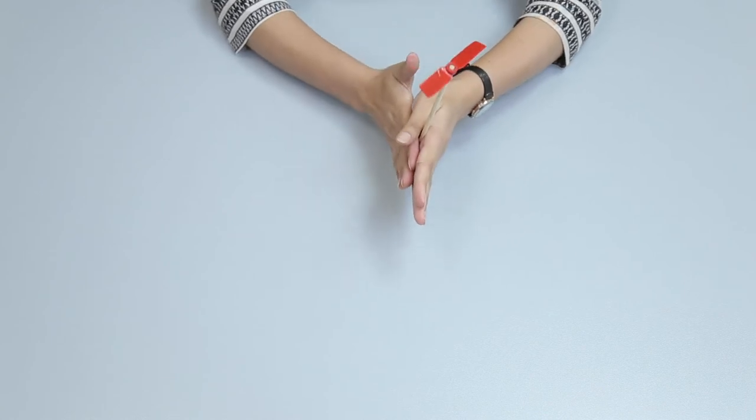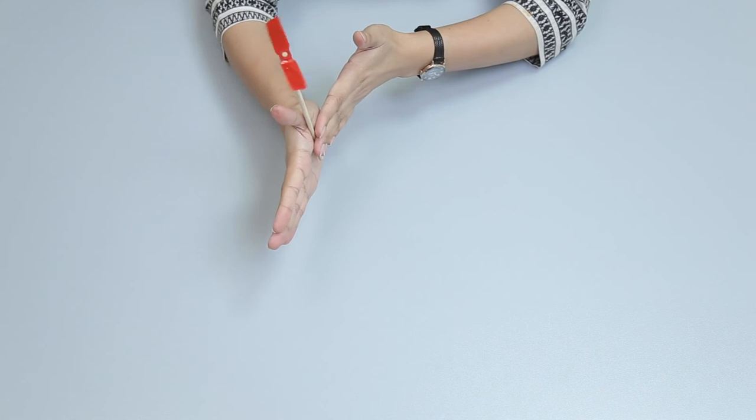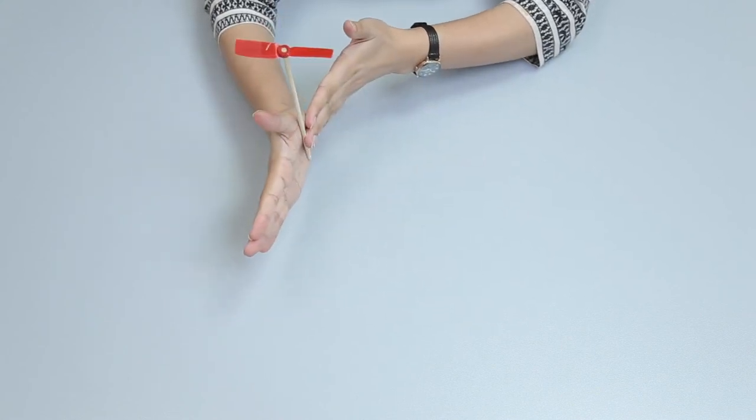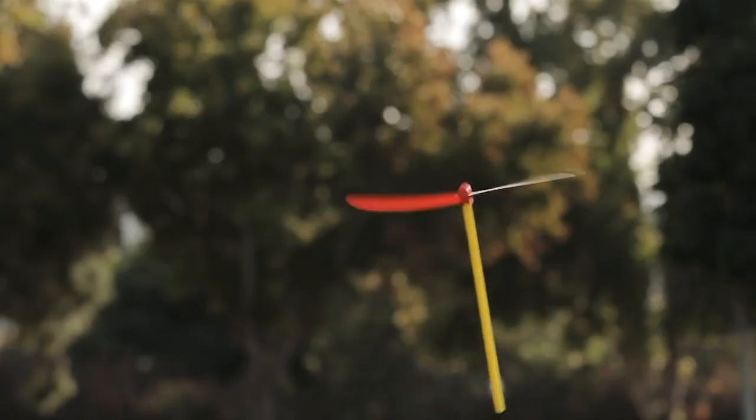Hold the wooden rod between the palms of your hands. Move one hand forward and another hand in the backward direction. Rub your palms to spin the propeller. Let the propeller fly.